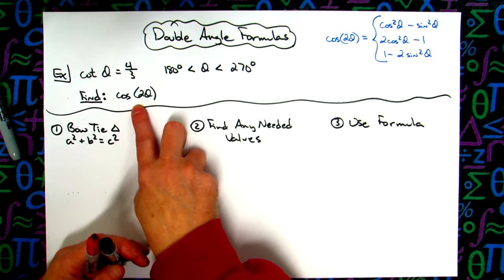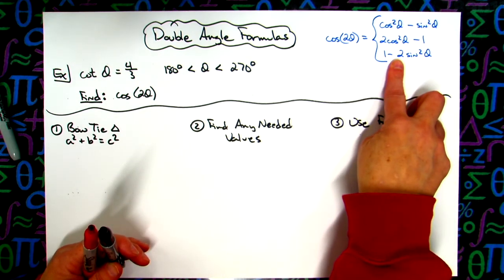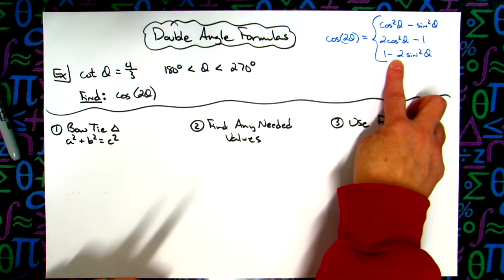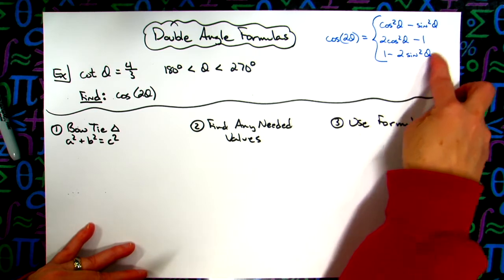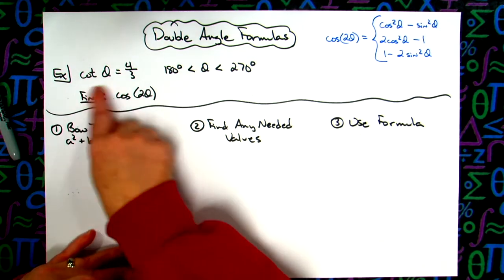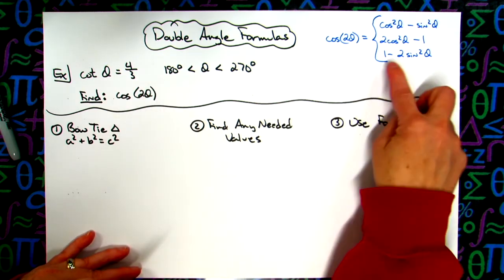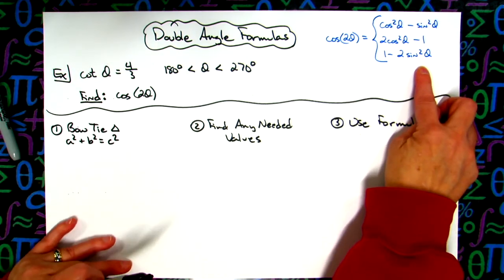Now since I am asking for the cosine of 2θ, I have a choice. I can choose any of these three formulas, and it's going to get the same answer. Sometimes you will choose these formulas based on what you're given. If I'm given the sine value, well then I should use the third formula, because I've already got it, it's going to be easy, I won't have to do steps one and two, I can just go straight to this.